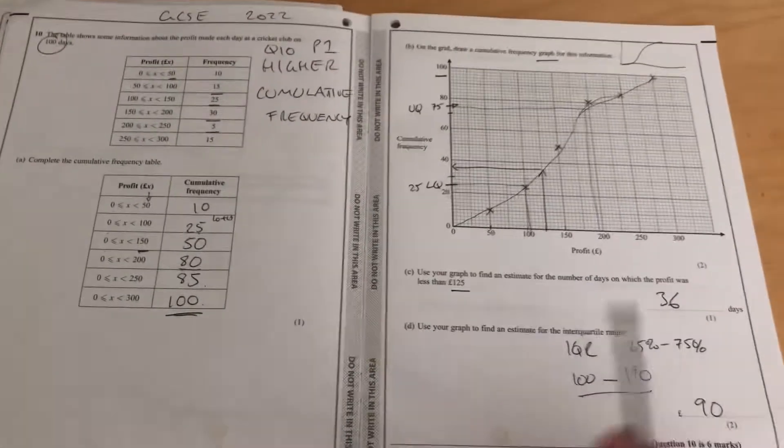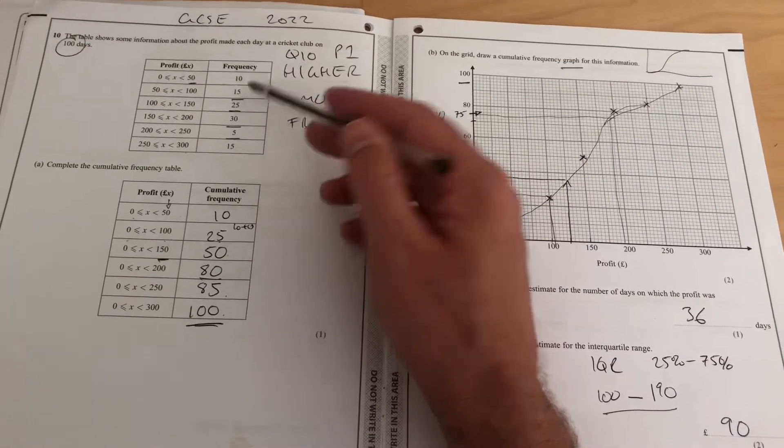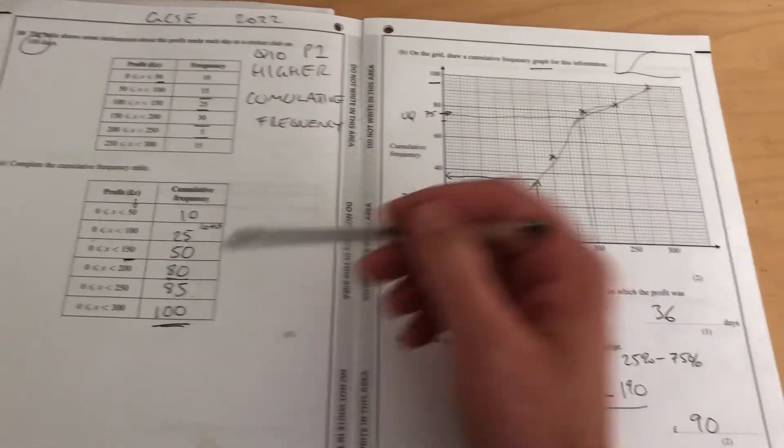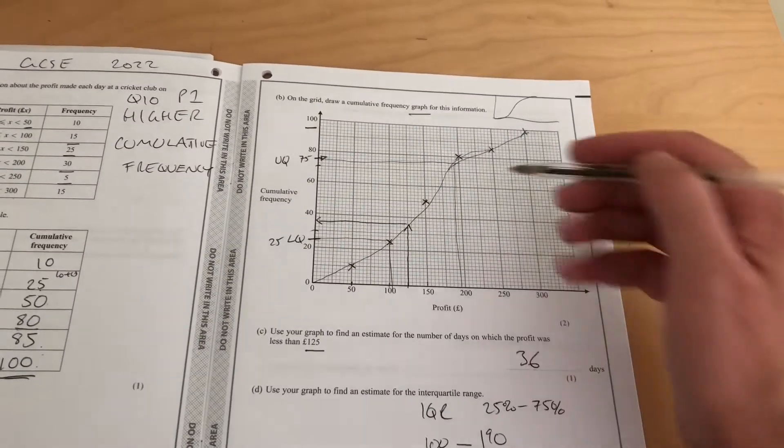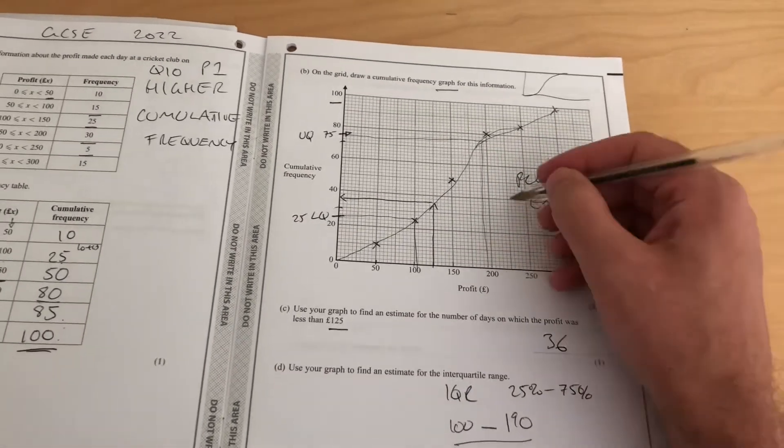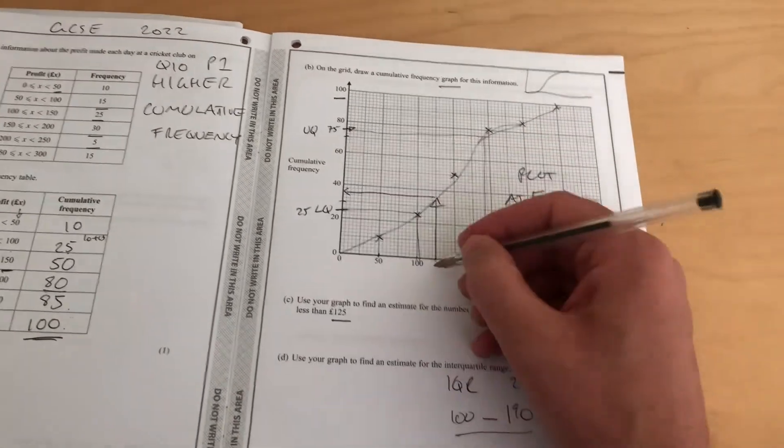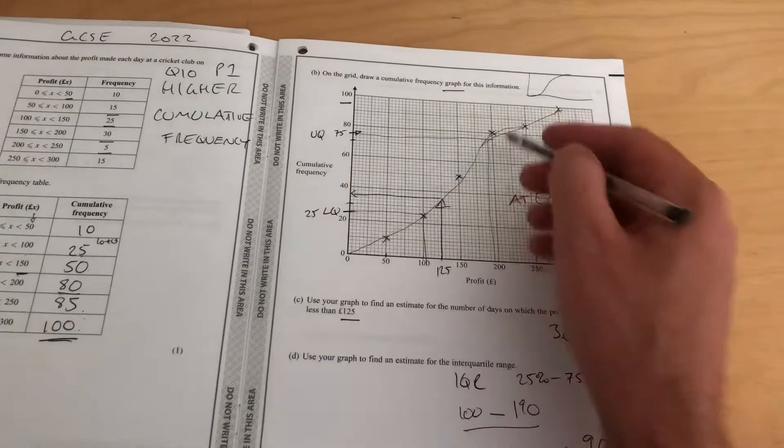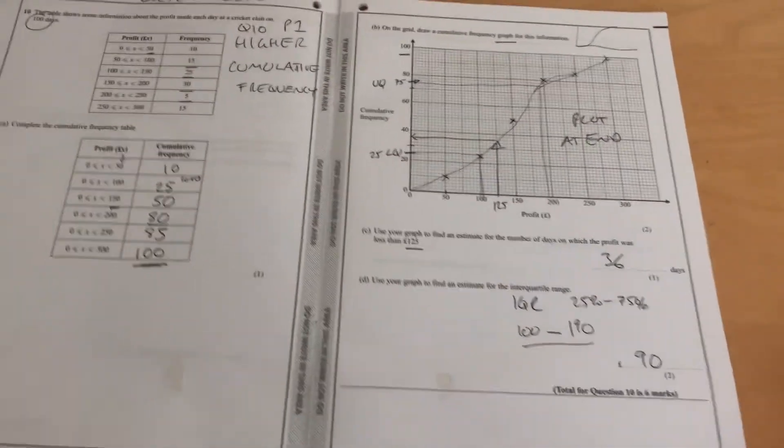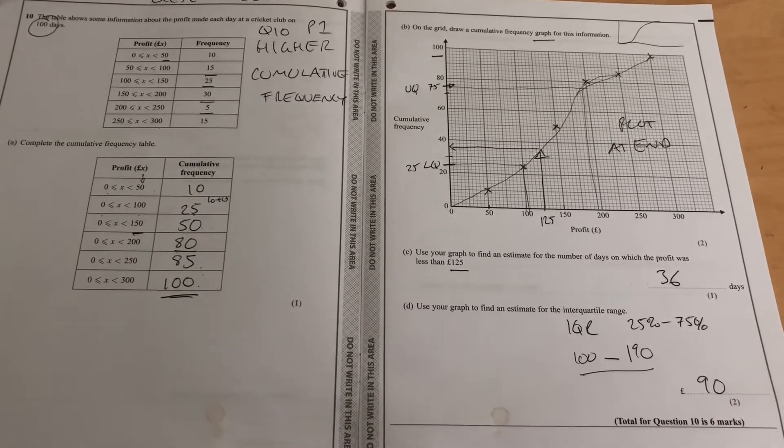Okay, so there it is. Add up each of those to the previous amount to get your cumulative frequency. Plot them at the end. You plot at the end of the interval. And then you can read off the graph here, reading up from £125. And there, reading across from the interquartile range. That's GCSE Higher, Paper 1, 2022. Thanks for watching. Don't forget to like, subscribe, and share.